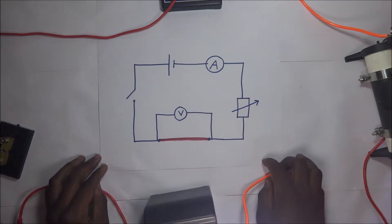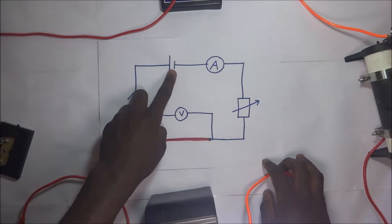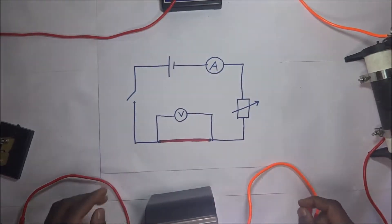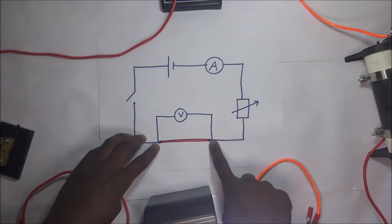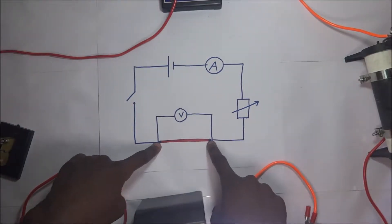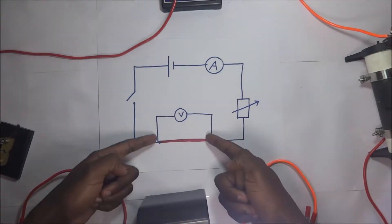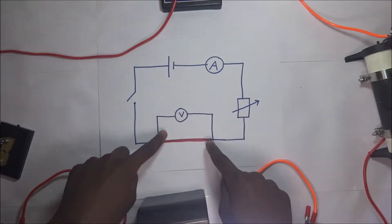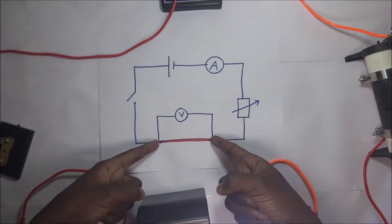Right before us, we have a circuit diagram. In this circuit diagram, we have a dry cell — just one dry cell — connected to an ammeter and then a rheostat. The rheostat is connected to a wire; this red thing you see is a representation of the wire. In my experiment, I will use a constantan wire, and the terminals of this constantan wire are connected across a voltmeter, which will measure the potential difference across the constantan wire.